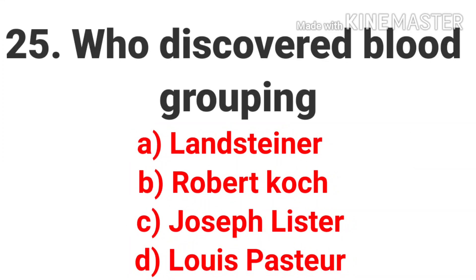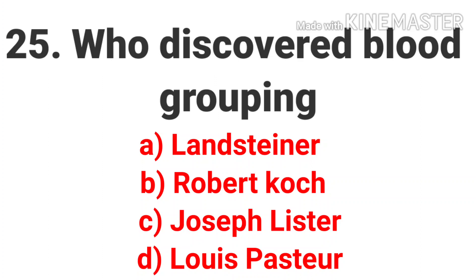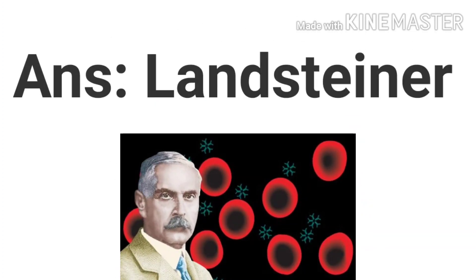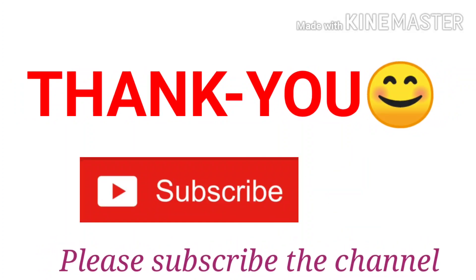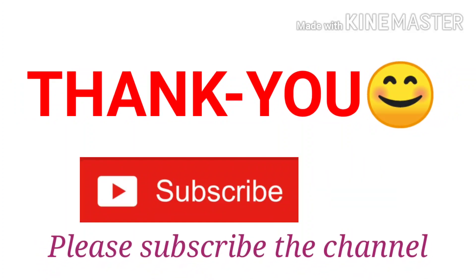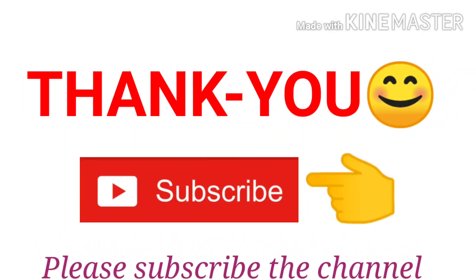The twenty-fifth and last question is: who discovered blood grouping? Options are Landsteiner, Robert Koch, Joseph Lister, and Louis Pasteur. It is a common and repeated question. The answer is Landsteiner. Thank you. Please subscribe the channel for more videos.